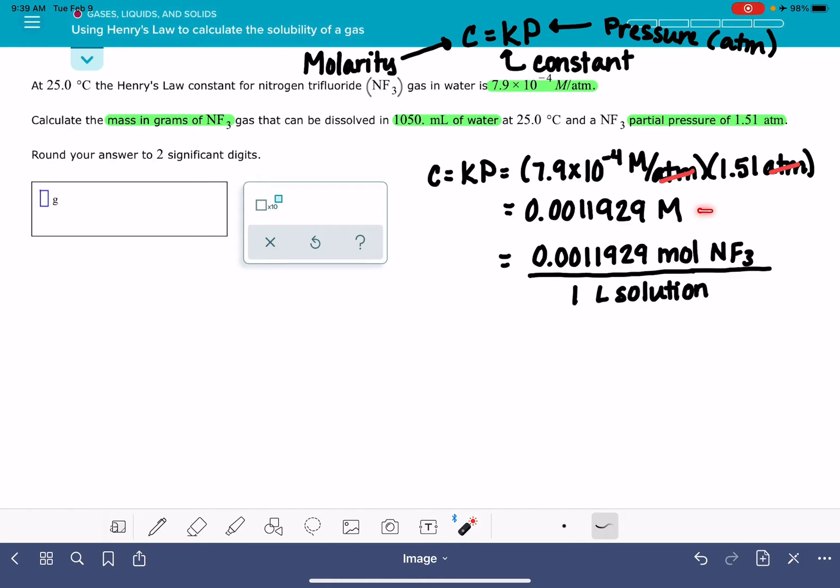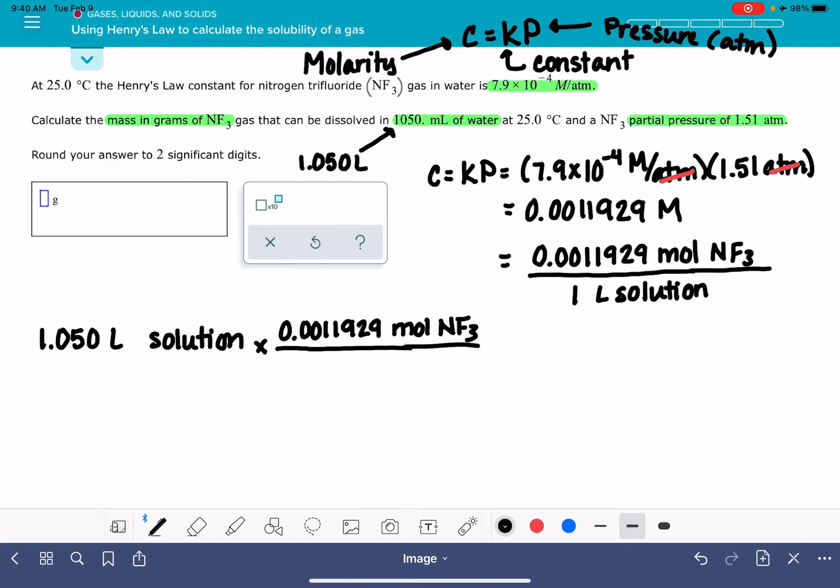If we think about molarity like a conversion factor that relates moles to volume, and we have a volume, we can actually use this to get a mass in grams. When we're treating this like a conversion factor problem, we want to start with the information that has been given to us. We know that we have 1.050 liters of solution. I've converted that milliliters into liters. That means we can multiply that by our molarity to convert into units of moles. 0.0011929 moles of NF3 for every liter.